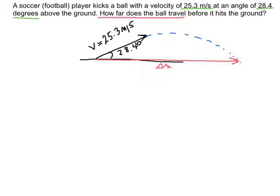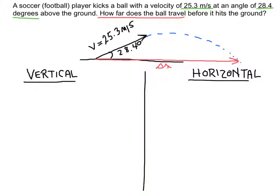Anytime we have projectile motion we really have two problems in one. It's tough to analyze a situation where an object is moving in two dimensions at once. So we think of the ball as moving up and down and also moving horizontally. We can split it into a vertical component and a horizontal component. Usually what you're solving for is the horizontal distance — that's delta x. To solve for that I use the equation: velocity in the x direction equals delta x over time. Rearranging, delta x equals velocity in the x direction times time.